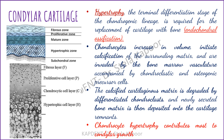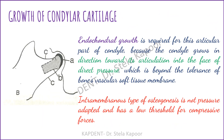The deepest layer is the zone of hypertrophy, which is essential for the replacement of cartilage with bone by the process of endochondral ossification. The chondrocytes increase in volume and initiate calcification of the surrounding matrix. This matrix is then invaded by bone marrow vasculature, which degrades the cartilaginous matrix and incorporates newly secreted bone matrix into the cartilage remnants. This process of chondrocyte hypertrophy contributes most to condylar growth.